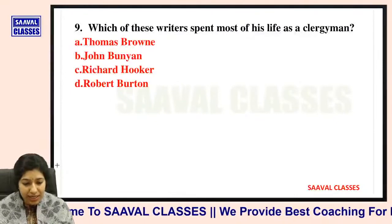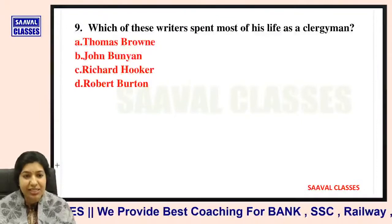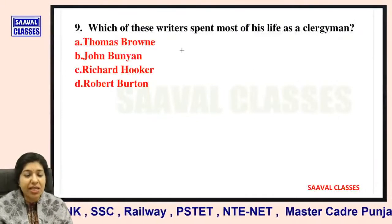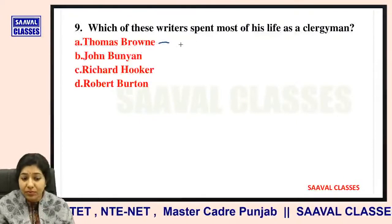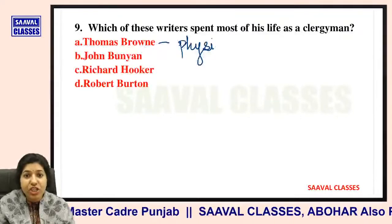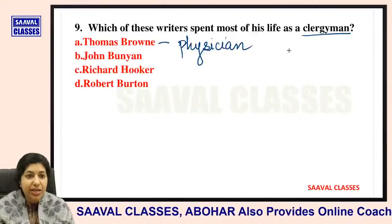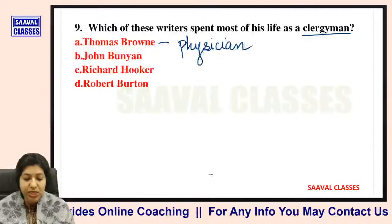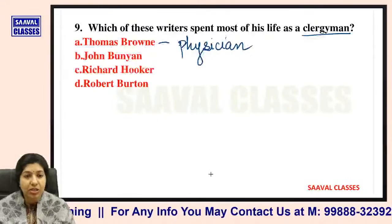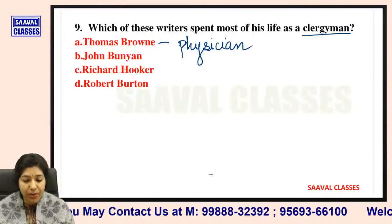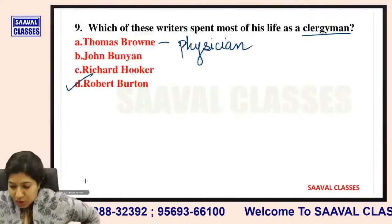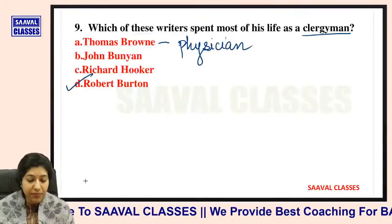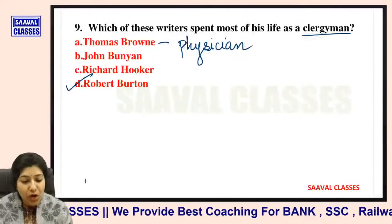Question number nine: Which of these writers spent most of his life as a clergyman? Thomas Brown was a physician, a doctor. So which of these was a clergyman — Thomas Brown, John Bunyan, Richard Hooker, or Robert Burton? The answer is Robert Burton. No doubt John Bunyan wrote the famous Pilgrim's Progress on spirituality, but Robert Burton was the clergyman.